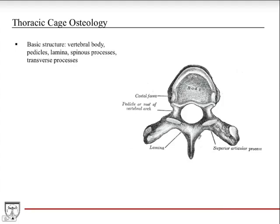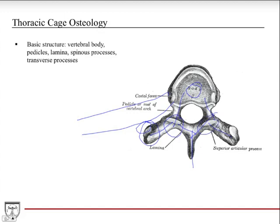Some basic osteology of the thoracic vertebrae: just like in a run-of-the-mill vertebra, you get a body here, then pedicles that stem out, and then the lamina that come in, and the spinous process. You have your transverse processes coming out this way. What's unique about the thoracic vertebrae is that they have these facets here to join with the ribs, because the ribs come out from the body and articulate — the ribs have a little knob that articulates with the thoracic vertebrae. They also have superior and inferior articular processes that form that shingle or stacking structure of the vertebrae, common structures throughout the vertebral column.